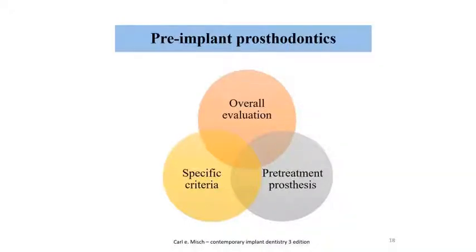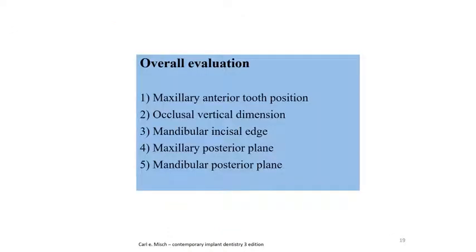Coming to peri-implant prosthodontics, it is divided into three parts: overall evaluation, specific criteria, and pre-treatment prosthesis. Overall evaluation has five parts: maxillary anterior tooth position, occlusal vertical dimension, mandibular incisal edge, maxillary posterior plane, and mandibular posterior plane.